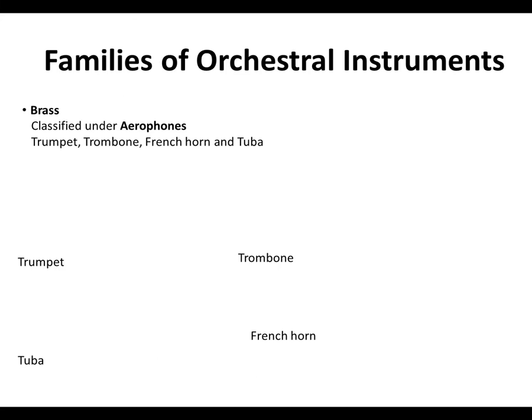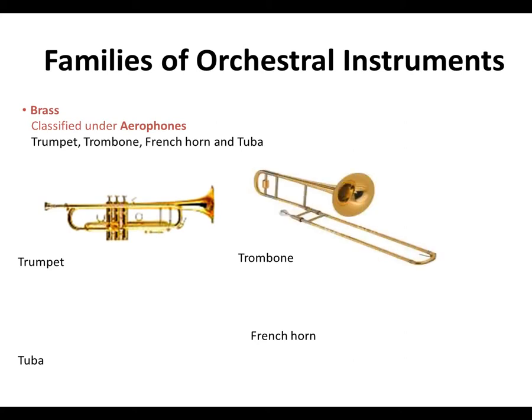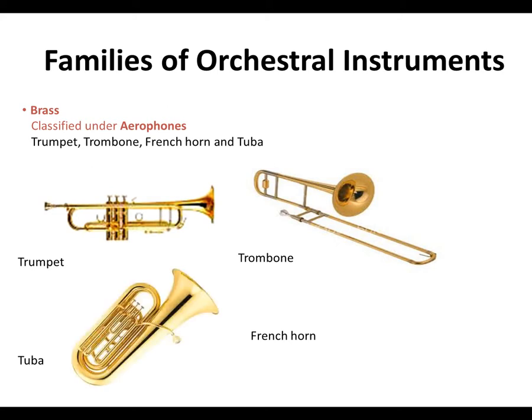The first family is brass, classified under aerophones. Some examples are the trumpet, the trombone, the French horn, and the tuba. This is how they look like. This is the trumpet — this is what it sounds like. Then we have the trombone, the tuba, and finally the French horn.